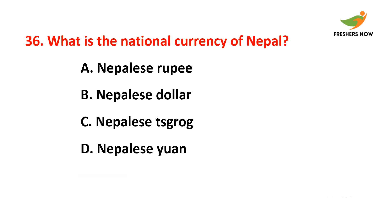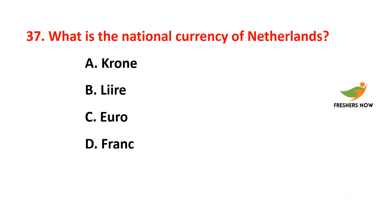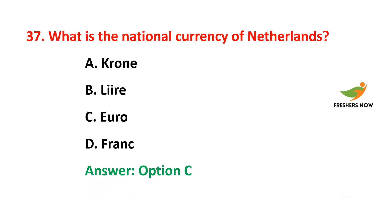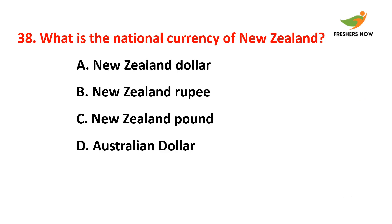Thirty-second question: What is the national currency of Monaco? The answer is option B — euro. Thirty-third question: What is the national currency of Montenegro? The answer is option C — euro. Thirty-fourth question: What is the national currency of Morocco? The answer is option D — Moroccan dirham. Thirty-fifth question: What is the national currency of Mozambique? The answer is option D — Mozambican metical.